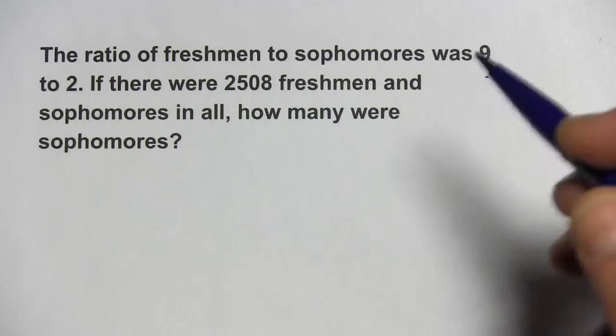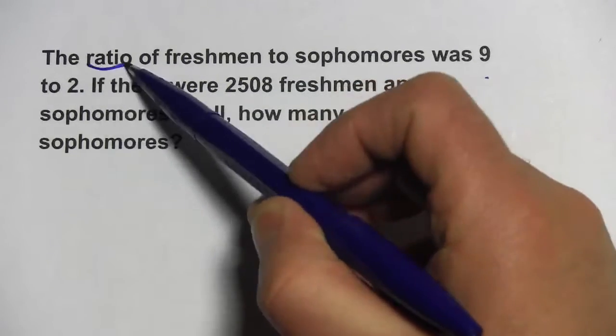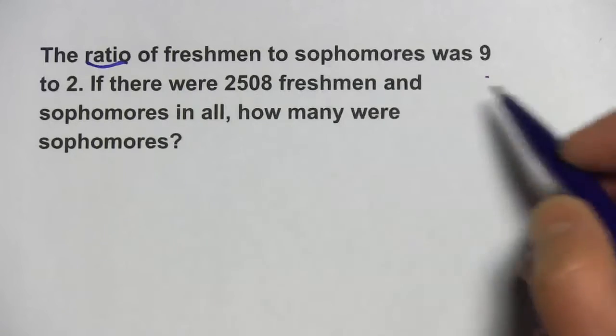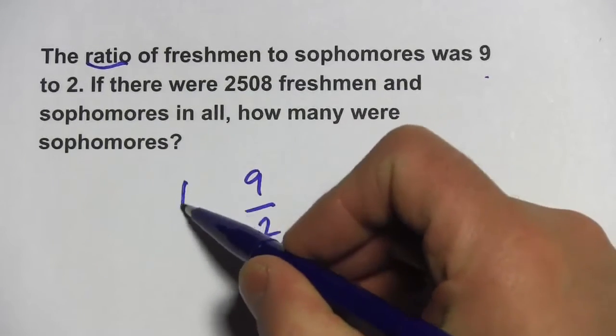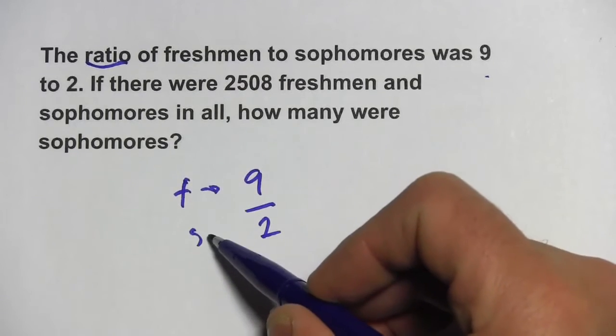Well, how are we going to set this up? First, we know a ratio of freshmen and sophomores. It's 9 to 2. So I'm just going to write that as a fraction, 9 to 2. So we've got freshmen here and we've got sophomores here.